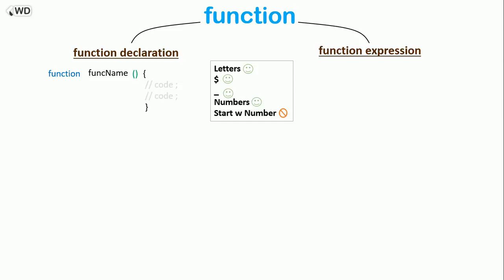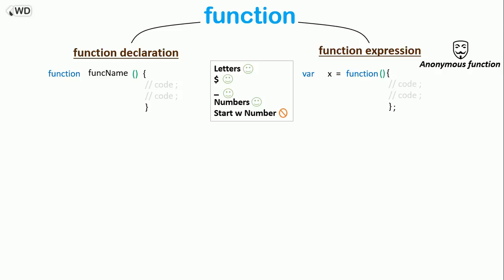For the function expression, we write the function keyword, then parentheses, then the curly brackets with the code inside. The function has no name, so this is also called an anonymous function. To call it later, we assign it to a variable — for example, x equals the anonymous function. We add a semicolon at the end because this is an executable statement, but for the function declaration it is not, so no semicolon is needed.